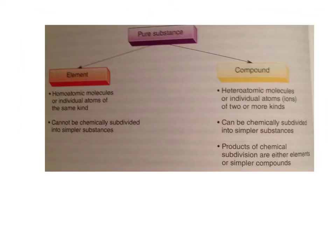If we take the pure substances branch and break it down: pure substances can't be physically separated, but they can be chemically separated. We can get elements, which are homoatomic — the same throughout, individual atoms of the same kind — and they cannot be chemically subdivided into smaller substances. Those are the elements on our periodic table. On the other side, we have compounds, which are heteroatomic molecules — two or more kinds of elements. They can be chemically subdivided into simpler substances, like H₂O into hydrogen and oxygen. Products of chemical subdivision are either elements or simpler compounds.